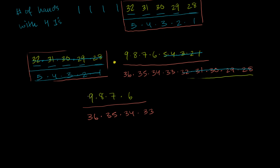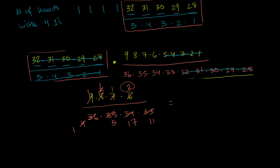Let's simplify. If we divide numerator and denominator by 9, that becomes 1, and this becomes 4. Divide by 4 — this becomes 2, this becomes 1. Divide by 7 — this becomes 1, this becomes 5. Divide both by 2 again — this becomes 1, this becomes 17. And divide this and this by 3 — this becomes 2, and this becomes 11. So we're left with 2 over 5 times 17 times 11.